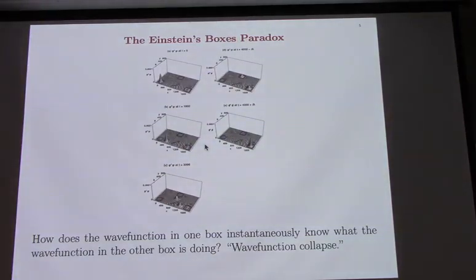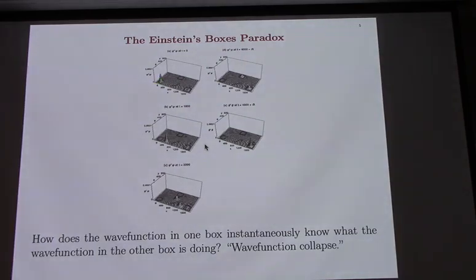This is the Einstein's boxes paradox. The idea is you have a particle in a box here and you let it go and it moves towards a beam splitter. And then at the beam splitter, the beam splits in half. One part of the particle's probability goes one way and the other goes the other way, until you wind up with the probability that the particle's in two different boxes in two different places disconnected from each other.